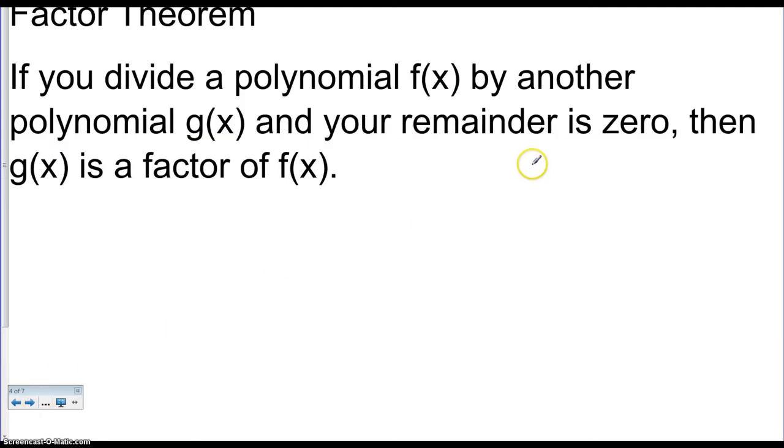And that states that if you divide a polynomial f(x) by another polynomial g(x), and your remainder is 0, then that means that g(x) is a factor of f(x).